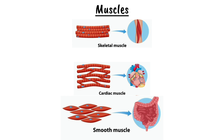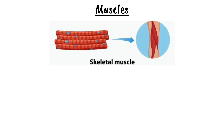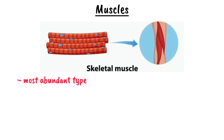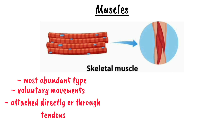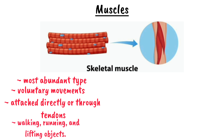The skeletal muscle is the most abundant type of muscle in the human body. It is responsible for voluntary movements, meaning we control these muscles consciously. These muscles are attached to bones either directly or through connective tissues called tendons. Skeletal muscles enable us to perform actions like walking, running, and lifting objects.